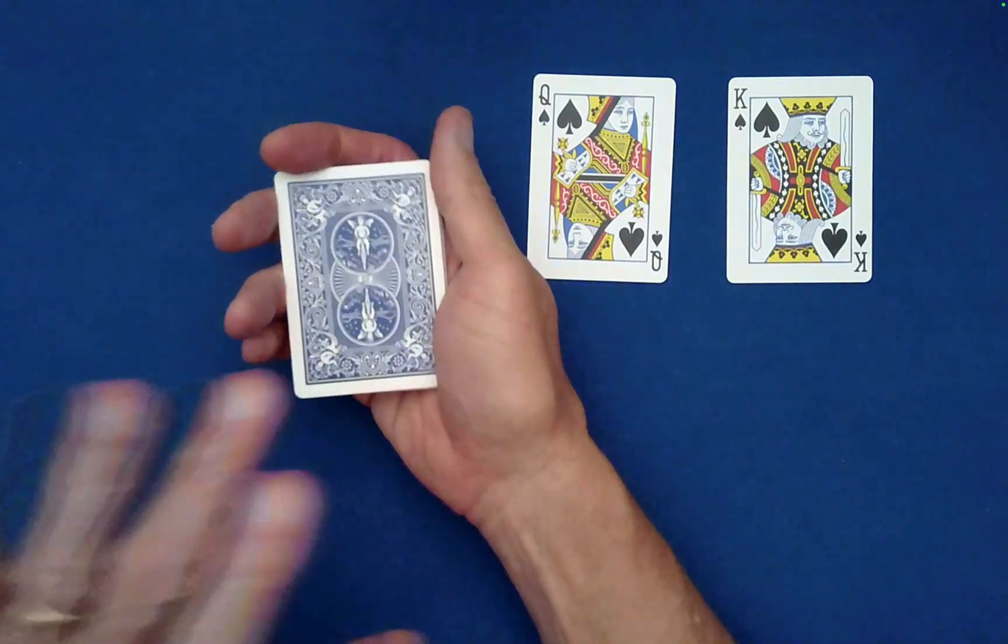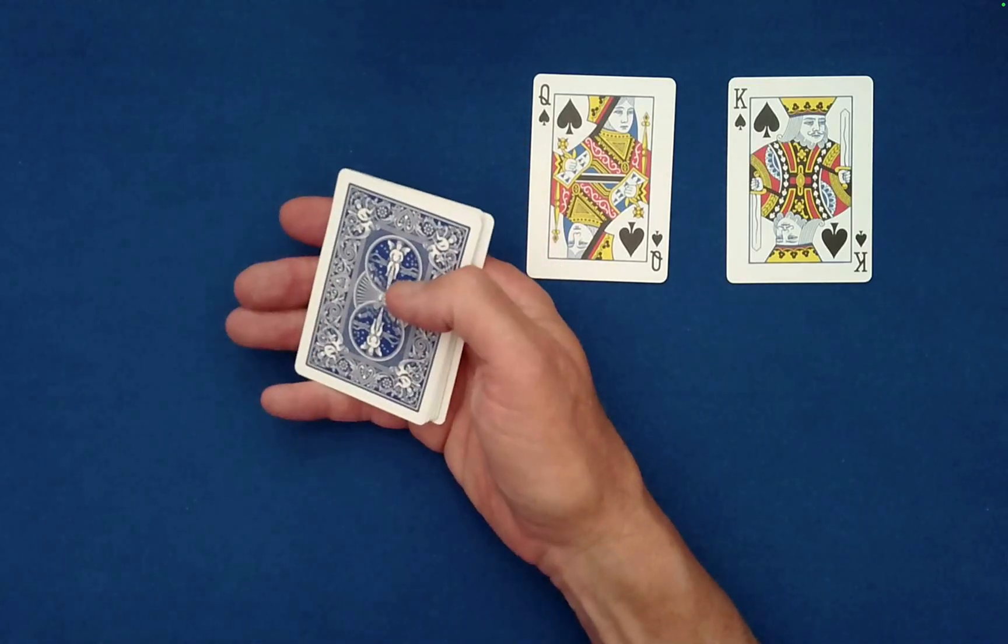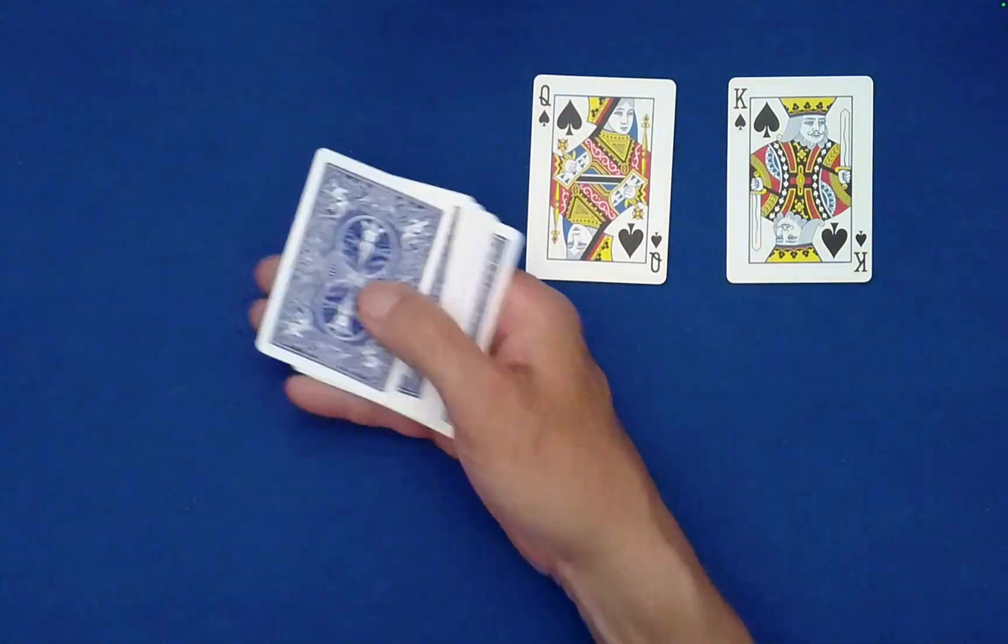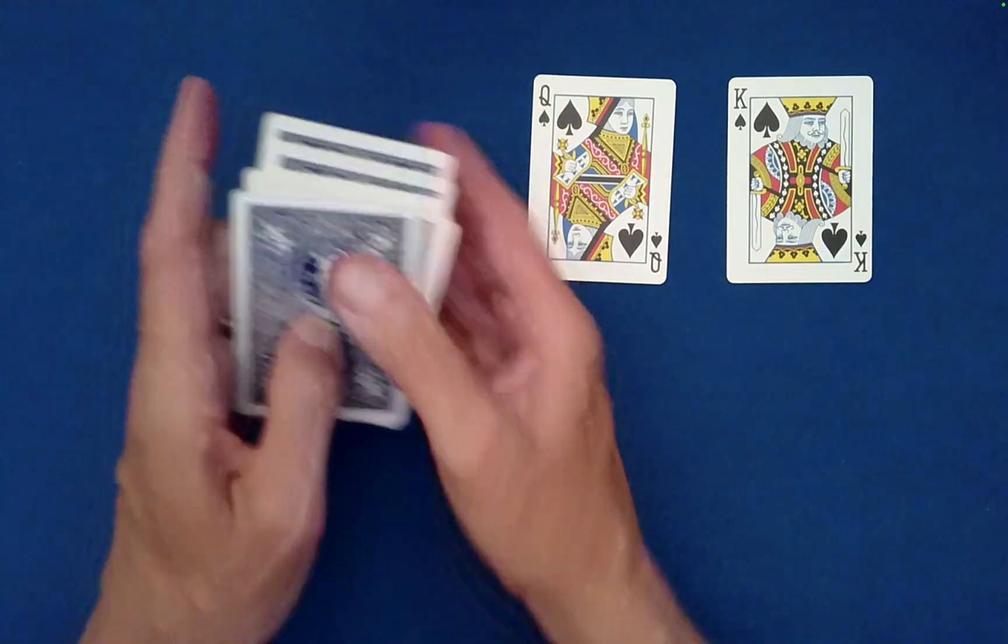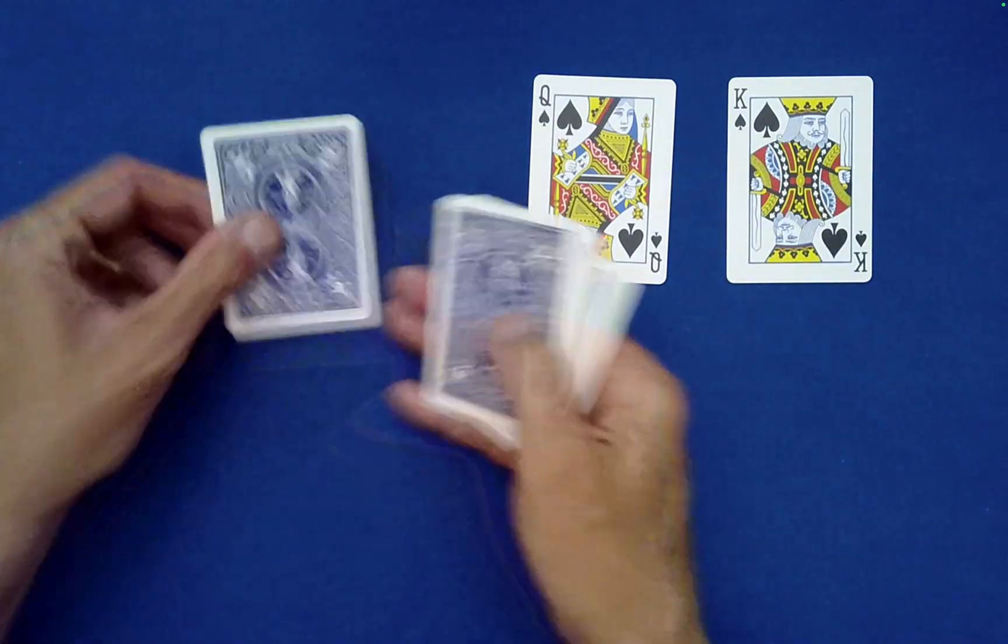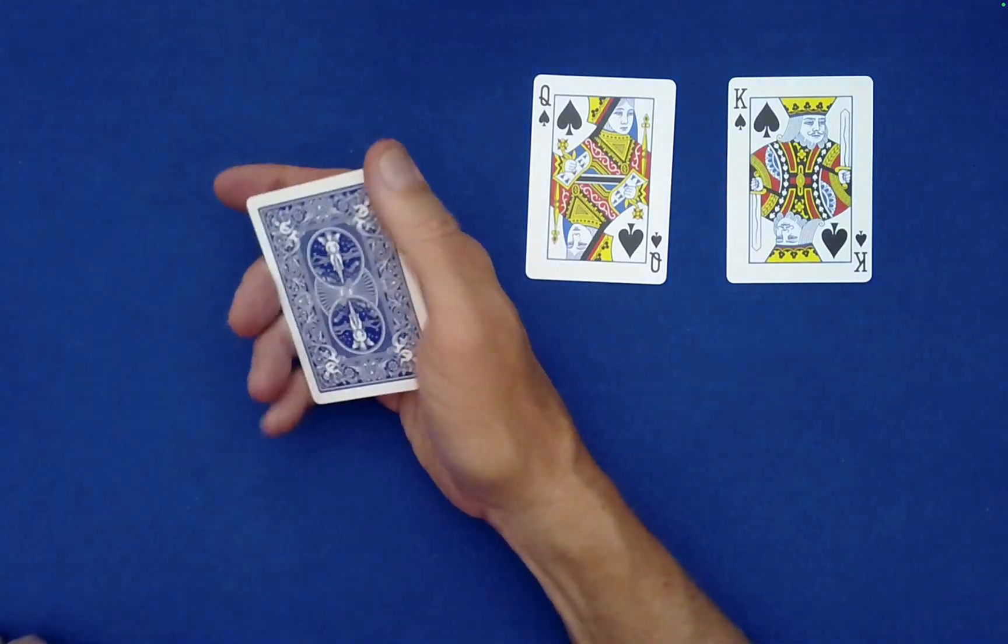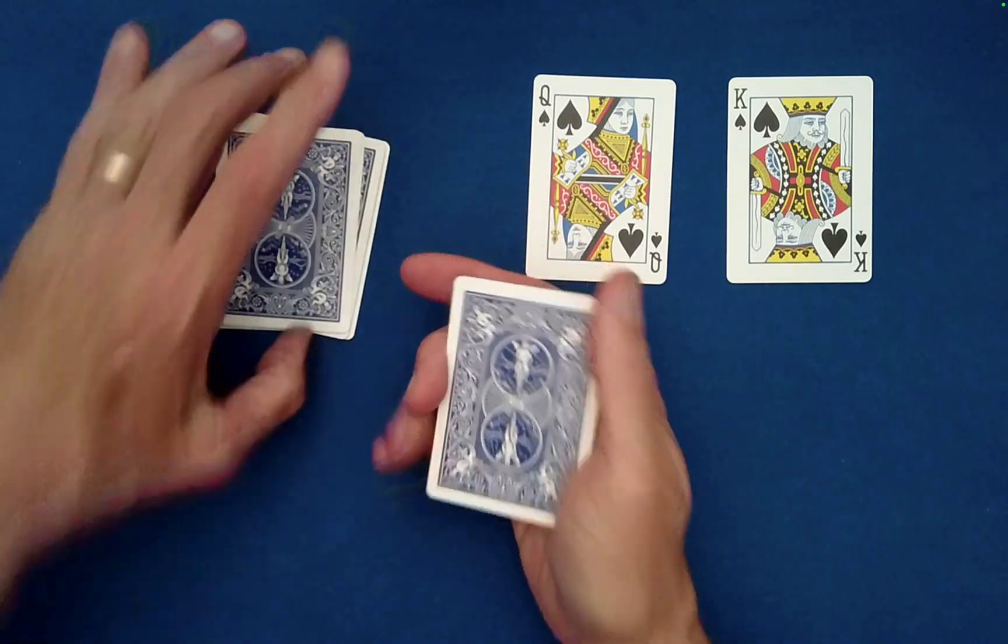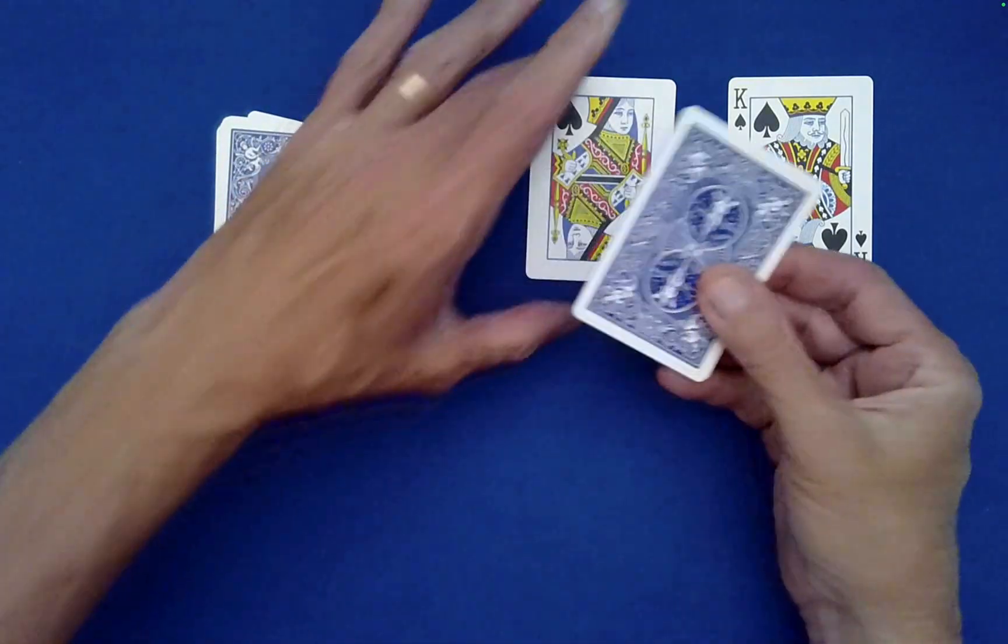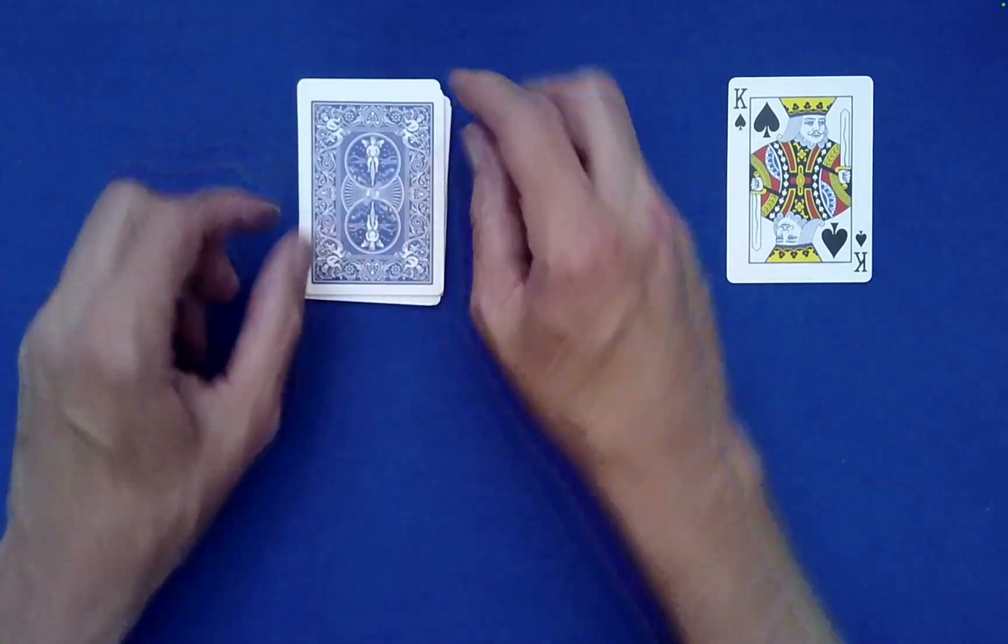Now, what you need the spectator to do is they just take the cards and you have them spell out queen, Q-U-E-E-N, drop the rest on top, of, O-F, drop the rest on top, and then spades, S-P-A-D-E-S. But before you drop these on top, we're going to put the queen of spades face up, and now we'll bury her right there.